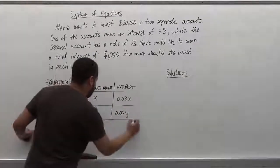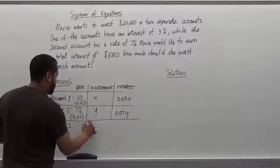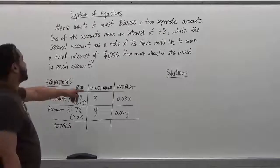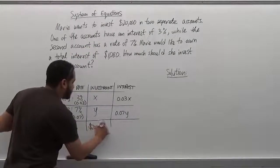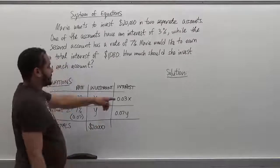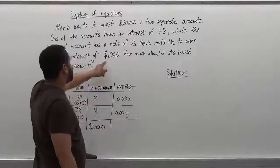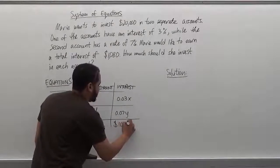Now the totals here will give us the equations themselves. So we know that the investment is $20,000. So x plus y should give us $20,000. Then 0.03x plus 0.07y should give us the interest rate, which is supposed to be $1,080.